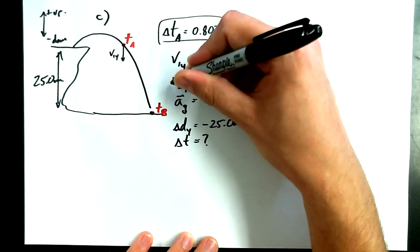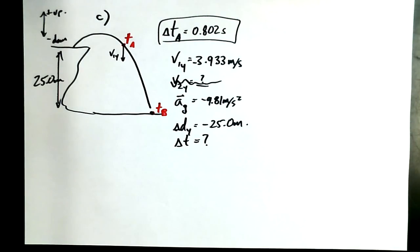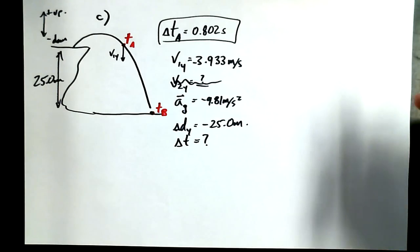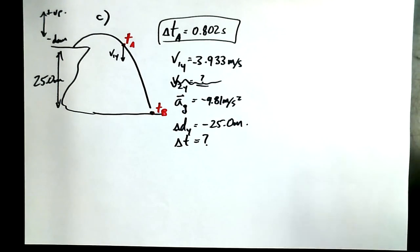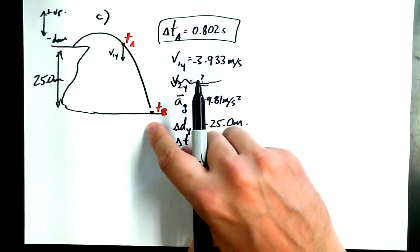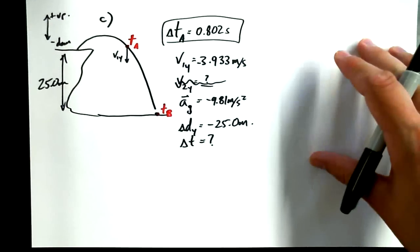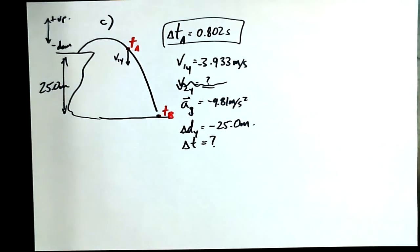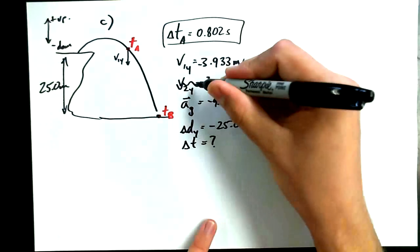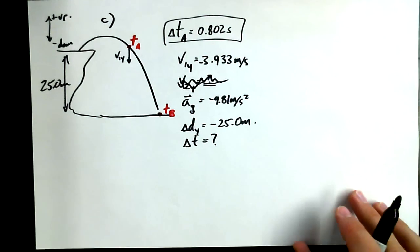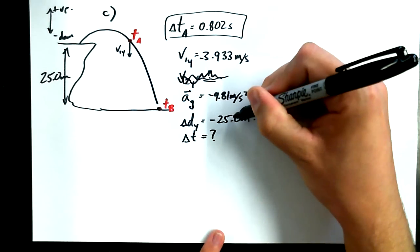V2Y, we don't happen to know, but I'll write it down anyway. Don't know, don't care. Acceleration in the Y direction is equal to, again, acceleration gravity, negative 9.81 meters per second squared. Displacement in the Y direction is, again, negative 25.0 meters. Because we're going the whole shebang all the way down now. And I would like to know delta T.